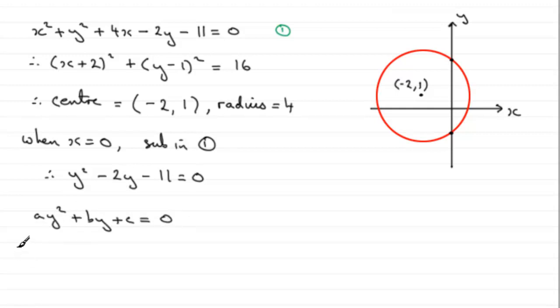And we should know that the solution of this would be y equals minus b plus or minus the square root of b squared minus 4ac all divided by 2a.